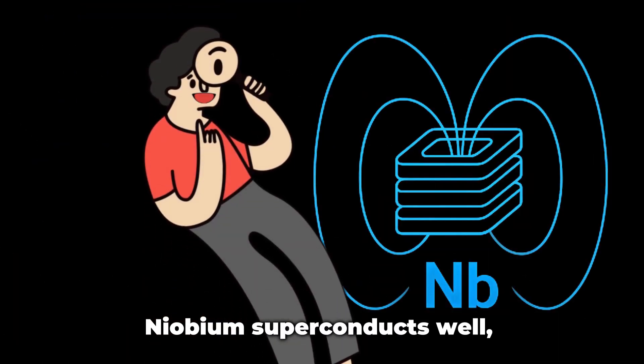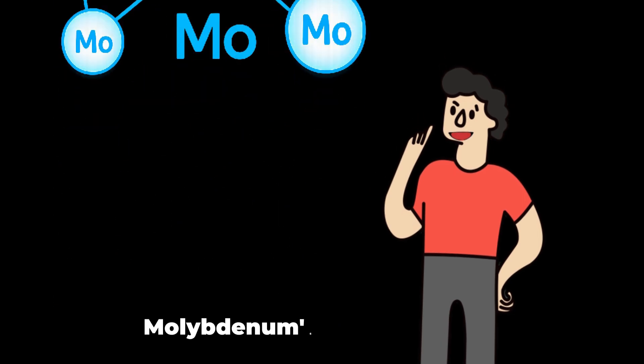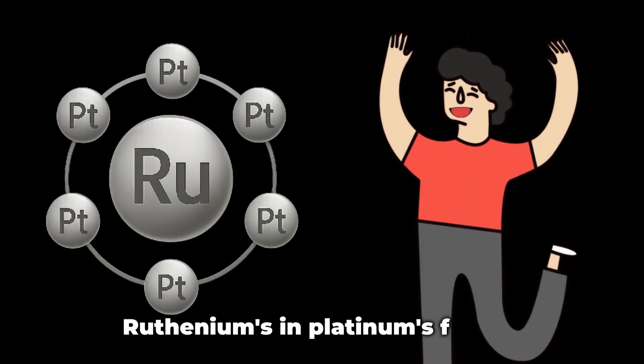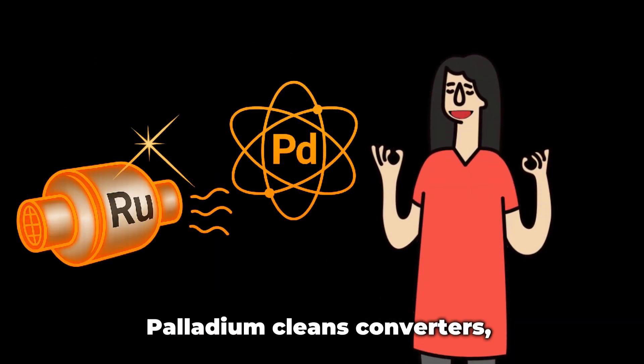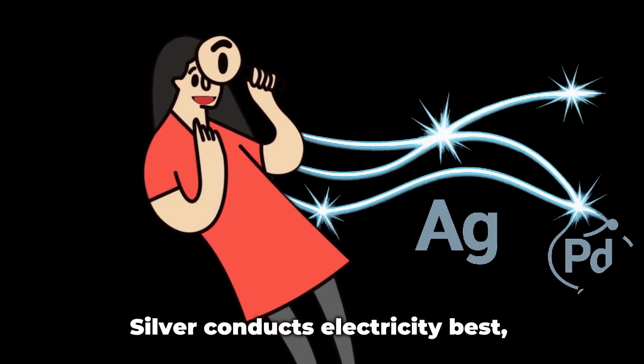Niobium superconducts well. Molybdenum's in steel alloys. Technetium's artificial from labs. Ruthenium's in platinum. Rhodium reflects so perfectly. Palladium cleans converters. Silver conducts electricity best.